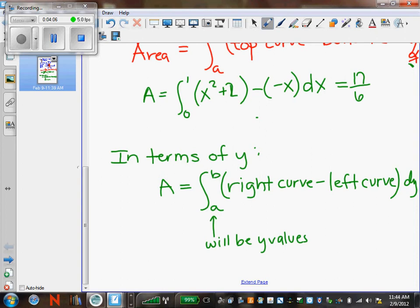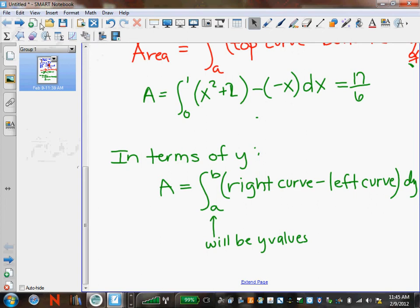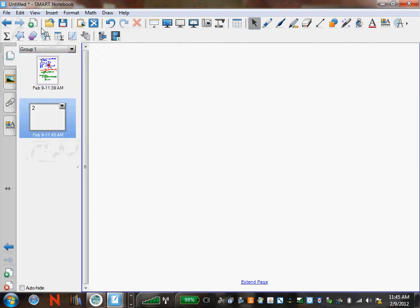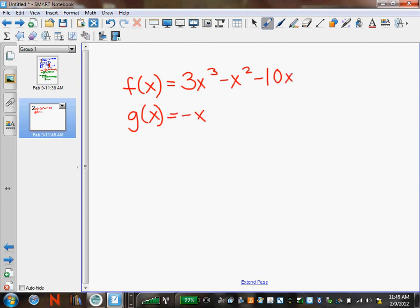Let's do one more example where there's two shaded regions. Okay, so our two functions, f of x and g of x. f of x is 3x cubed minus x squared minus 10x. And g of x is negative x squared plus 2x. Find that area of the bounded region.